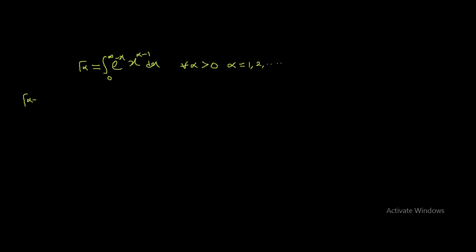Now suppose you have Gamma(alpha + 1). What is this going to give you? This is going to be equal to the integral from 0 to infinity of e^(-x) times x raised to the power (alpha + 1 - 1), dx. Since alpha + 1 minus 1 equals alpha, we get the integral from 0 to infinity of e^(-x) times x^alpha, dx.